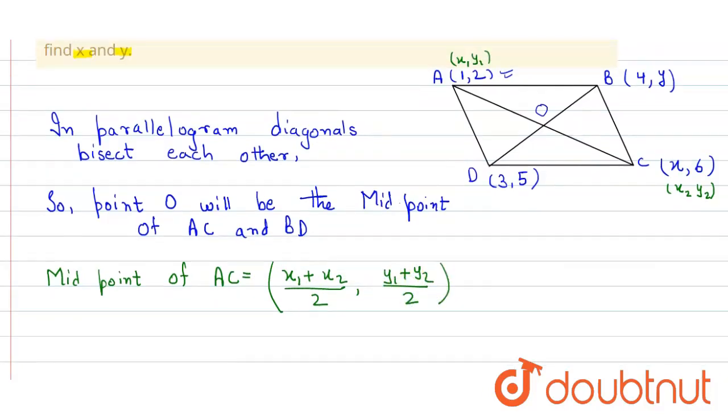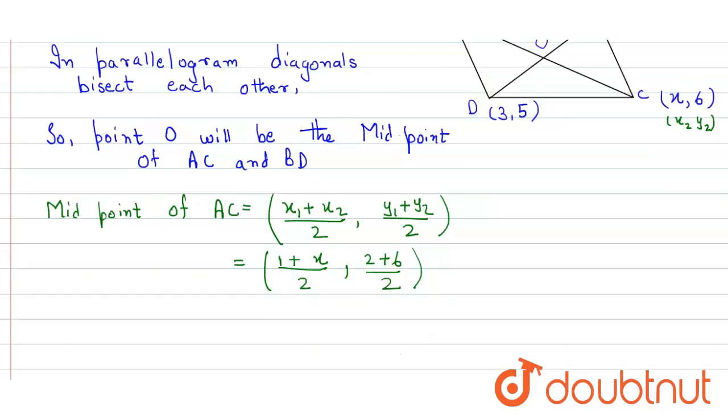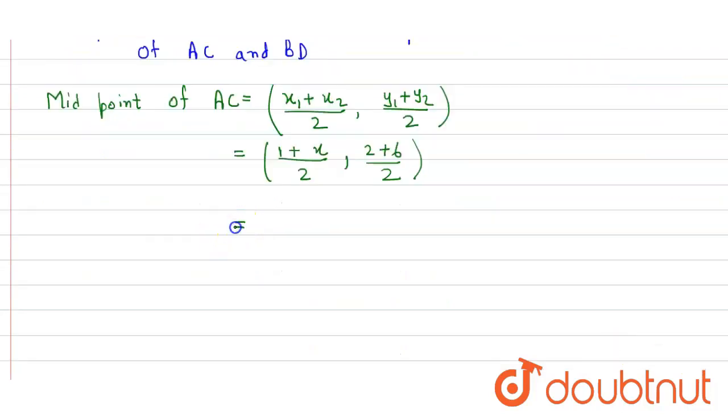So here we put the values. x1 is 1 plus x2 is x divided by 2, and 2 plus 6 upon 2. So we get (1+x)/2 and 8 divided by 2 is equal to 4.